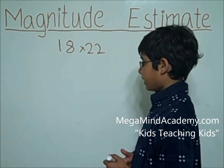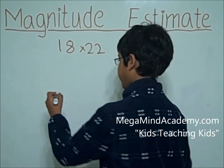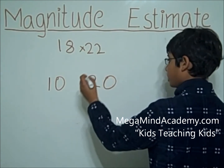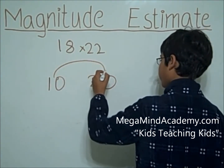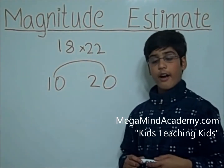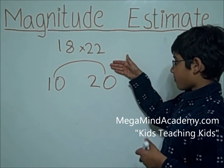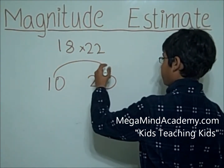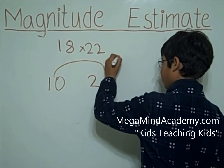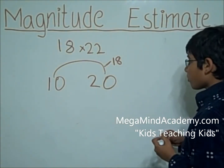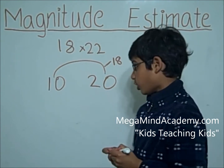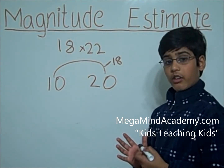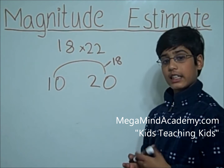Let's round 18 to the nearest tens. 18 falls between 10 and 20. We're going to put a line from 10 to 20. About where on this line would 18 be? 18 would probably be right here. So 18 is closer to 20 than to 10, so 18 rounded to the nearest tens is 20.